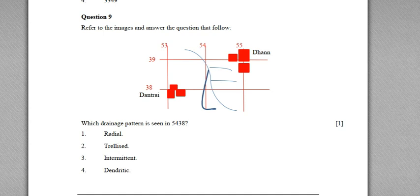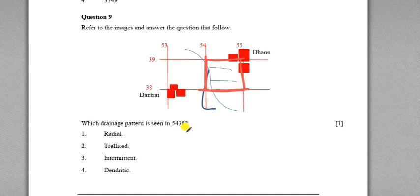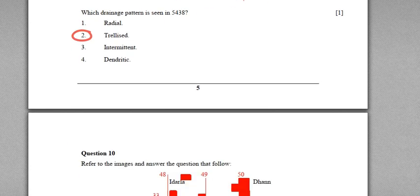Question nine asks: what is the drainage pattern seen in grid square 5438? First identify the grid square — 54 is the line on the left and 38 is the line at the bottom. As per the reduced syllabus, there are only three drainage patterns to study. In this grid square, two tributaries join the mainstream in a parallel manner at almost 90-degree angles. Such a pattern is called a trellis pattern. Radial pattern means rivers moving outward from a central point; dendritic is like the branching of a tree. The answer here is trellis pattern.